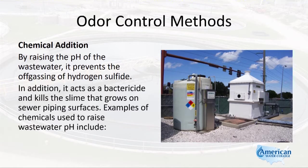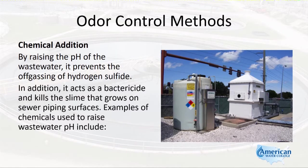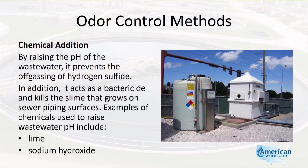In addition, raising the pH acts as a bactericide and kills the slime that grows on the sewer piping surfaces. Examples of chemicals used to raise wastewater pH include lime and sodium hydroxide.